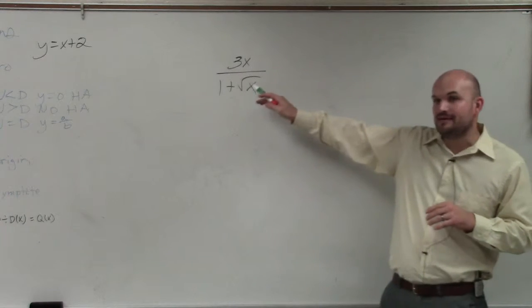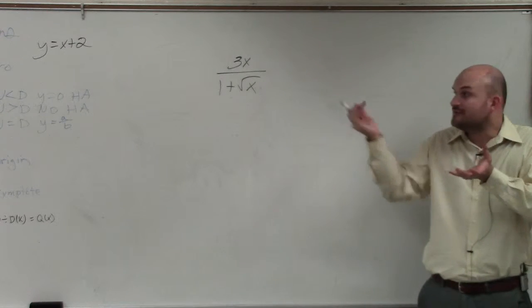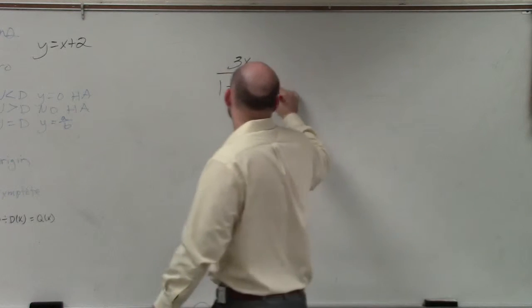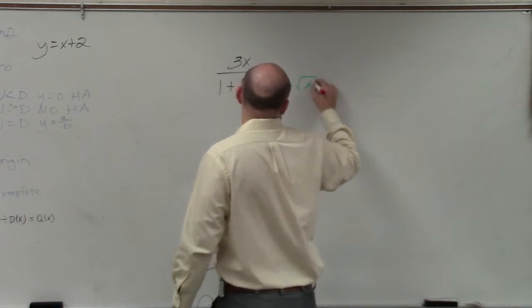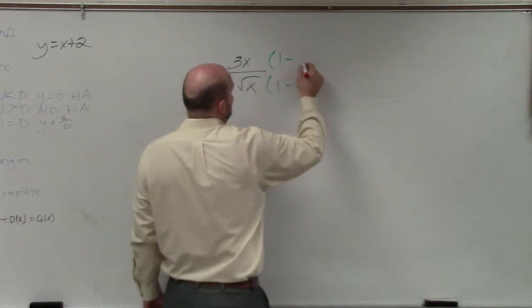The same thing, we need to get rid of the radical. The only way to get rid of the radical is when you multiply by its conjugate. So 1 minus square root of x is going to get rid of it.